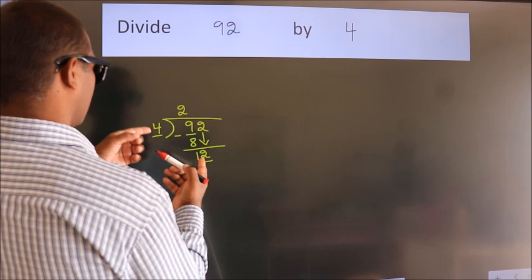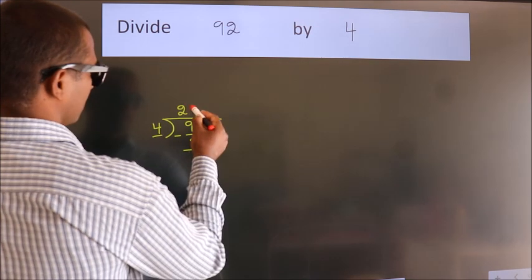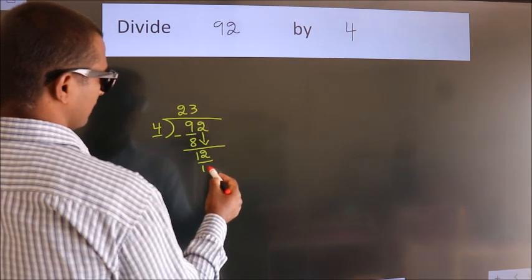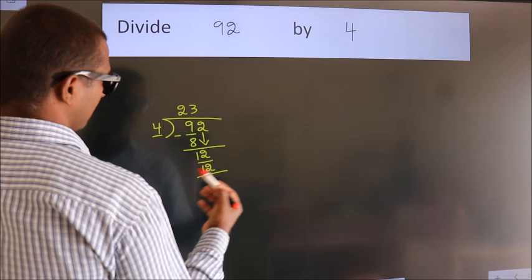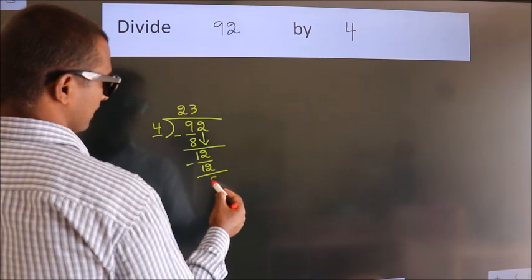When do we get 12? In 4 table. 4 threes, 12. Now, we subtract. We get 0.